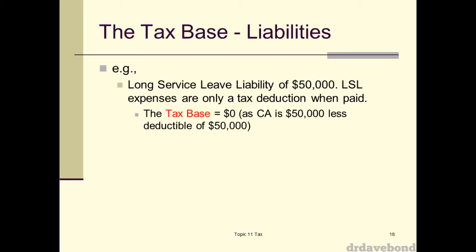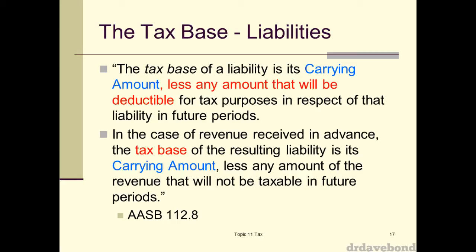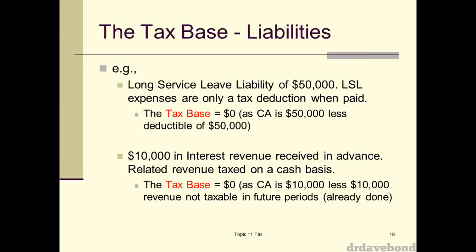In the case of revenue in advance, the tax base of the resulting liability is the carrying amount less any amount of revenue that will not be taxable in future periods. You need to look at how the taxation worked with the money collected upfront. For example, $10,000 in interest revenue received in advance where the related revenue is taxed on a cash basis — the tax base is zero, because that revenue is not going to be taxable in future periods as it has already been taxed. So $10,000 less $10,000 gives you zero.